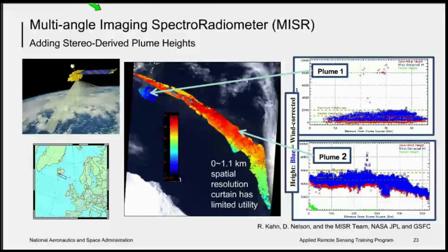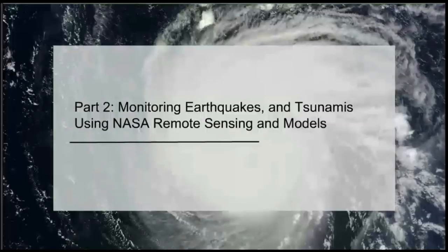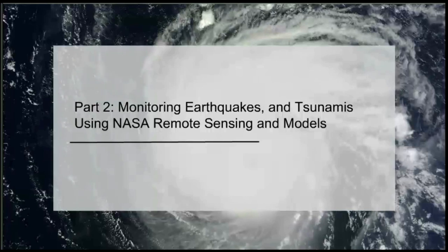One issue with the MISR data is that its spatial resolution, which is on the order of a kilometer, has limited its utility. But for large eruptions, that may be less of a factor. Here is a list of remote sensing resources for monitoring volcanic ash, included here for you to review offline. This concludes the volcano and volcanic ash portion of the session.